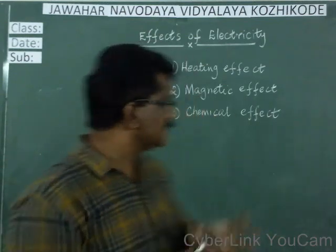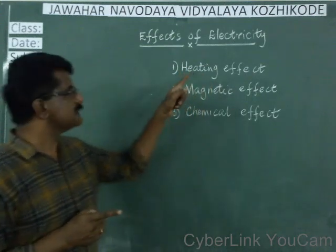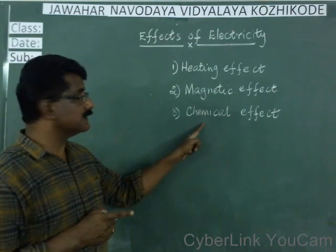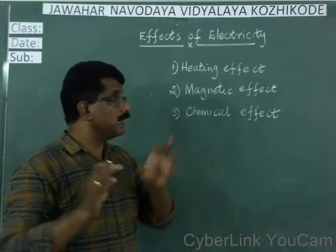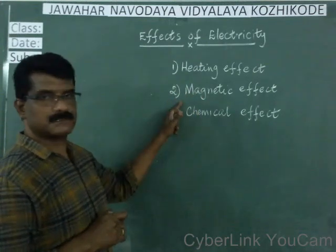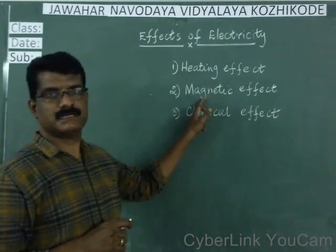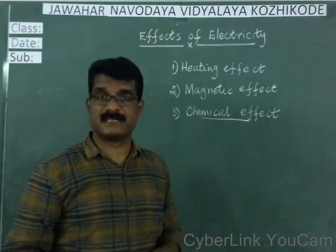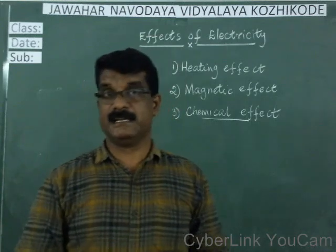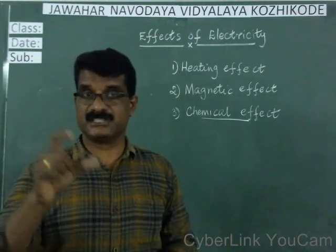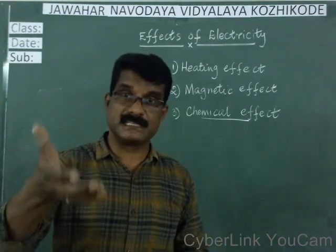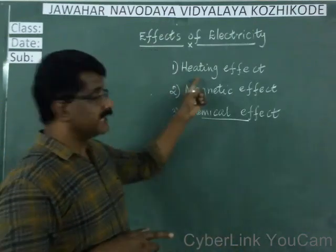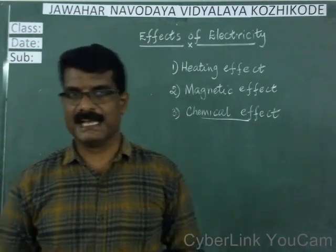There are three effects of electric current we are going to discuss. One is heating effect, next is magnetic effect, and the third one is chemical effect. Out of these three, the heating effect and magnetic effect we will be discussing this year in seventh class. We will be discussing about chemical effect in the eighth standard, where there is another chapter on the chemical effect of electricity. Here we are going to discuss about the heating effect and magnetic effect of electric current.